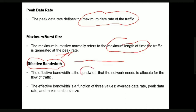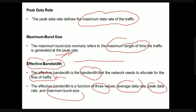The last traffic descriptor is effective bandwidth. Effective bandwidth is the amount of bandwidth which the network needs to allocate for the traffic. It is a function of three values: average data rate, peak data rate, and maximum burst size. That is why we studied all these descriptors — they together determine the effective bandwidth.